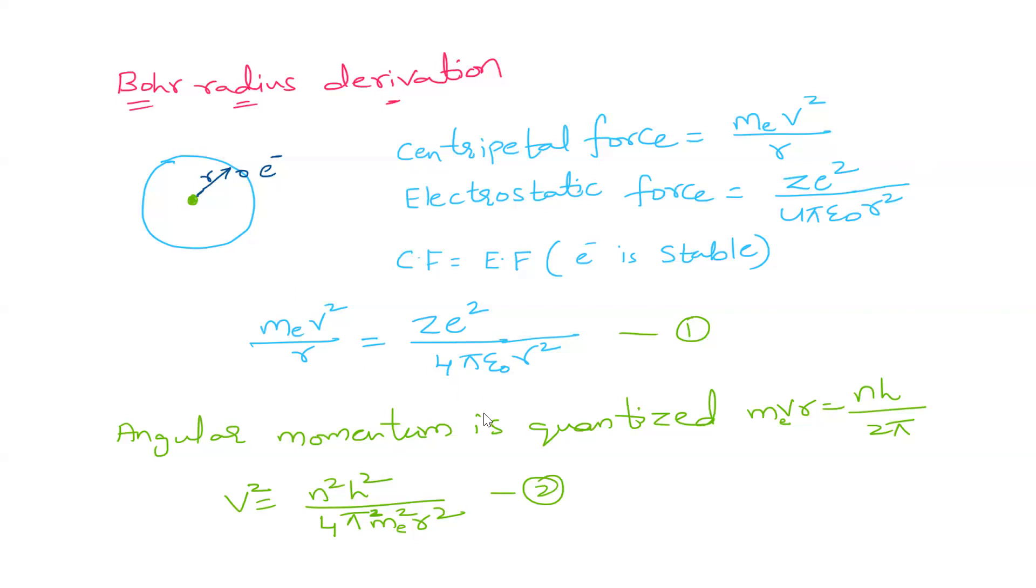When we equate this, we know that angular momentum is quantized, that is MeVR is equal to NH by 2π.